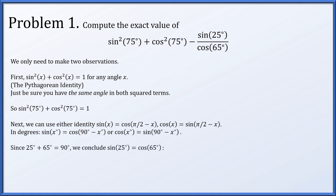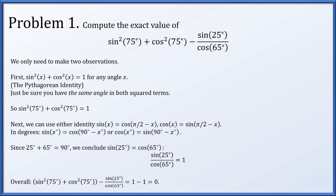25 plus 65 is 90, so the sine of 25 degrees equals the cosine of 90 degrees minus 25 degrees, which is 65 degrees. So that ratio sine of 25 degrees over cosine of 65 degrees is equal to 1. Altogether, we then have 1 minus 1, so this is exactly equal to 0.